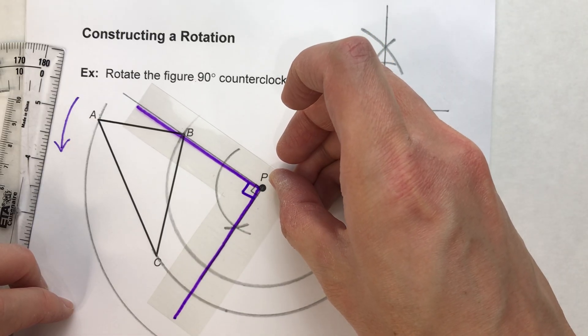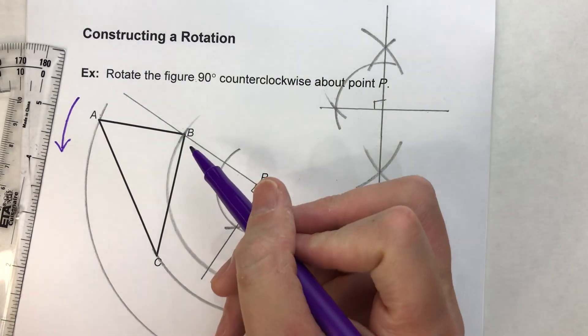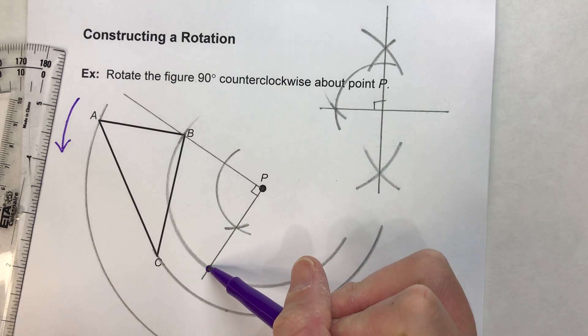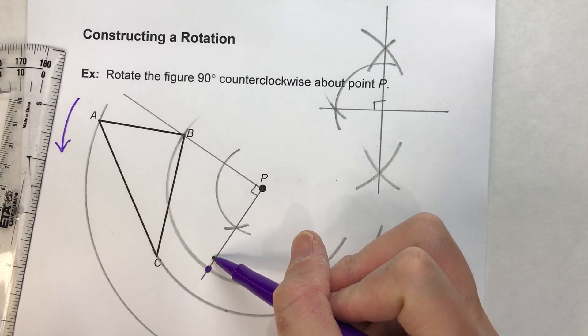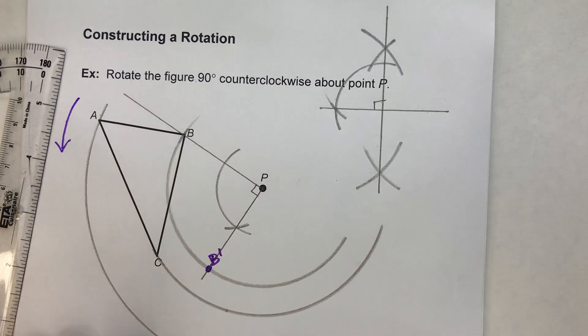So now I know where B prime is. B prime follows this path until it hits the right angle right there. I'll put it like right here. There we go. There's my B prime.